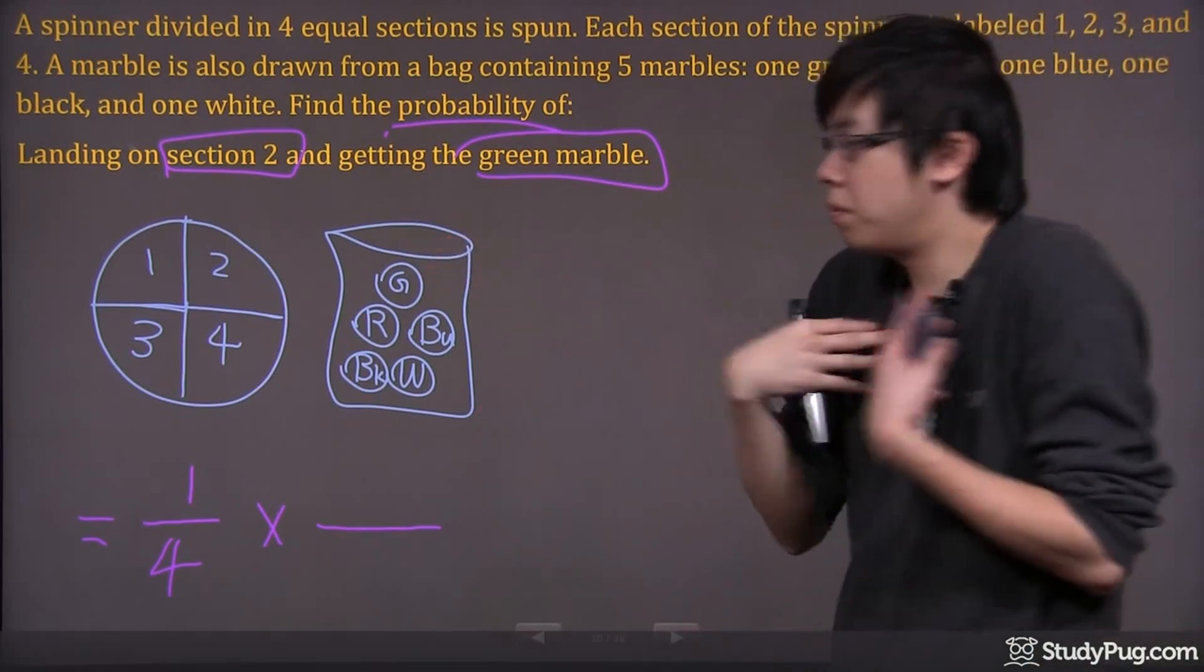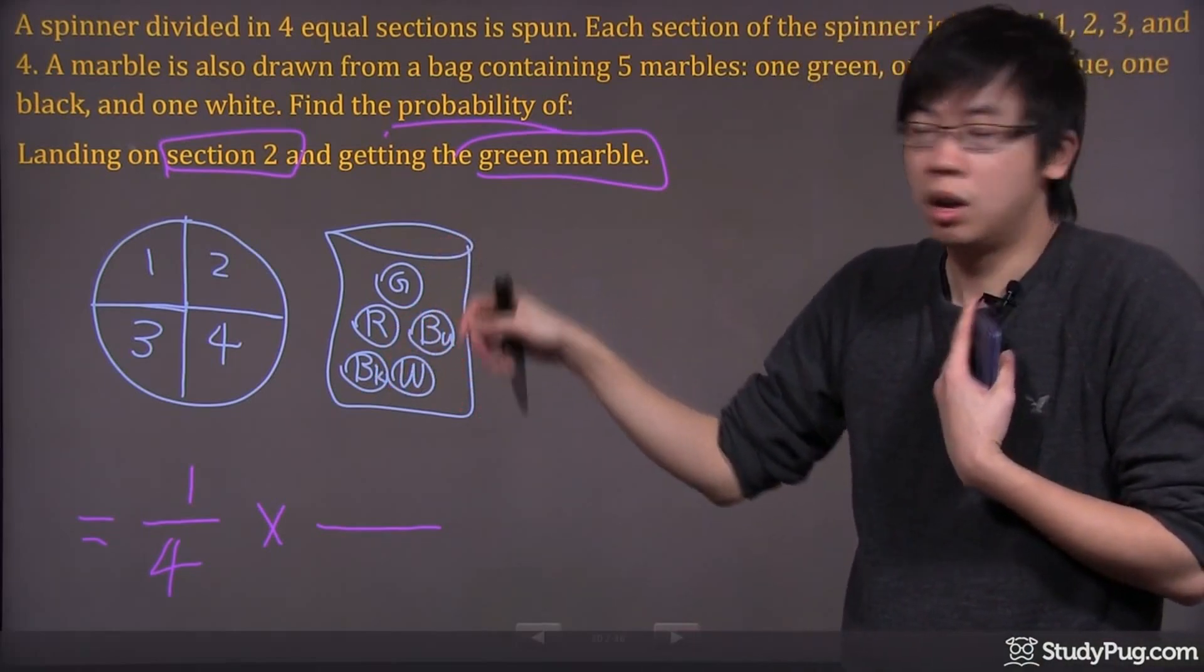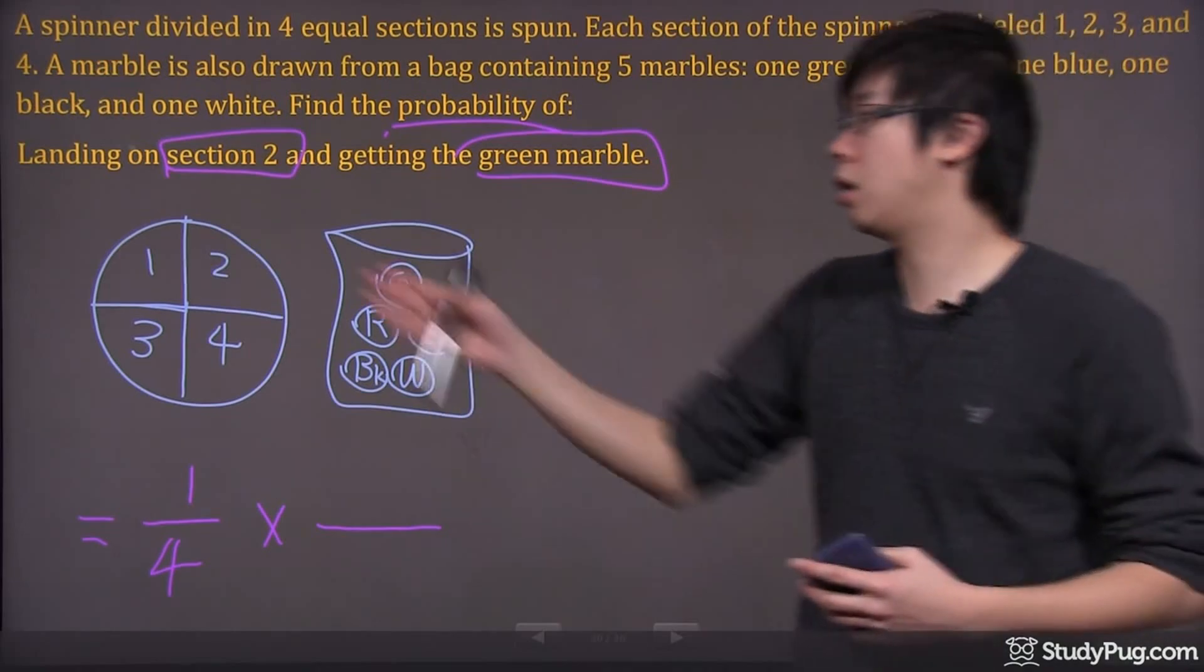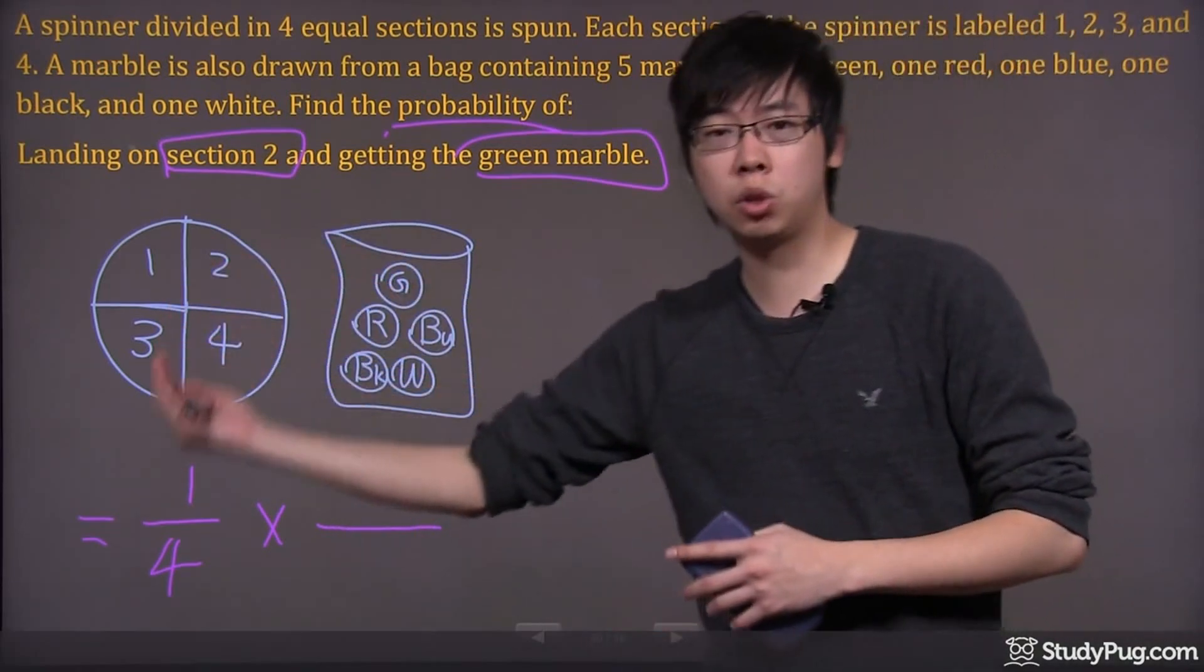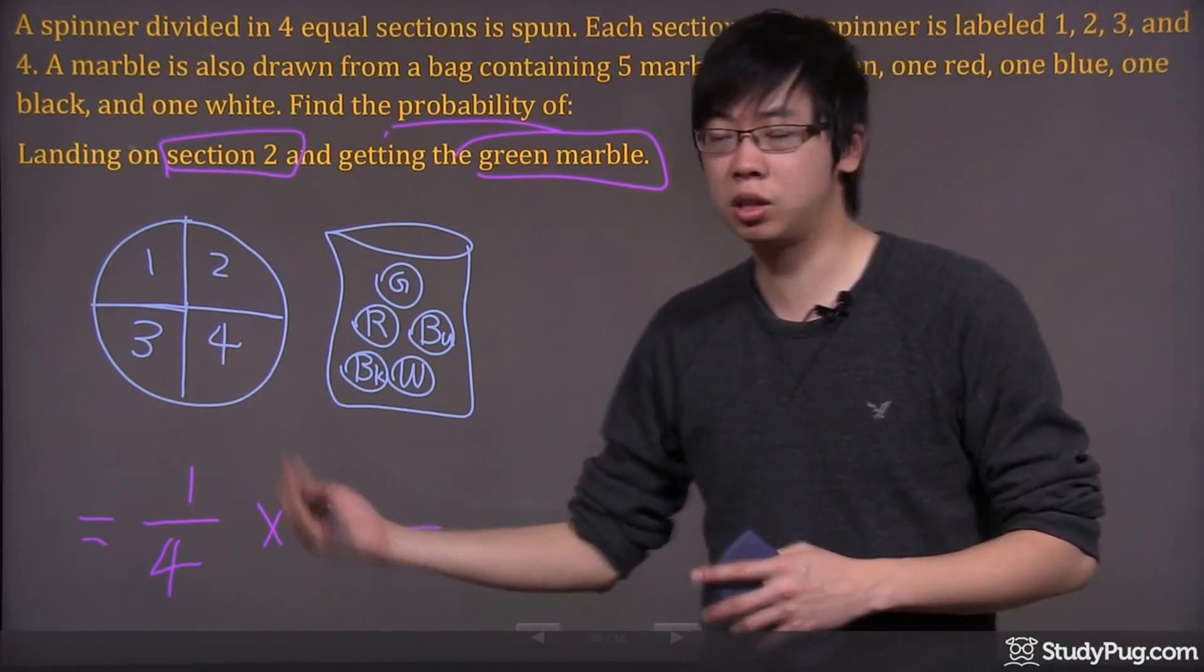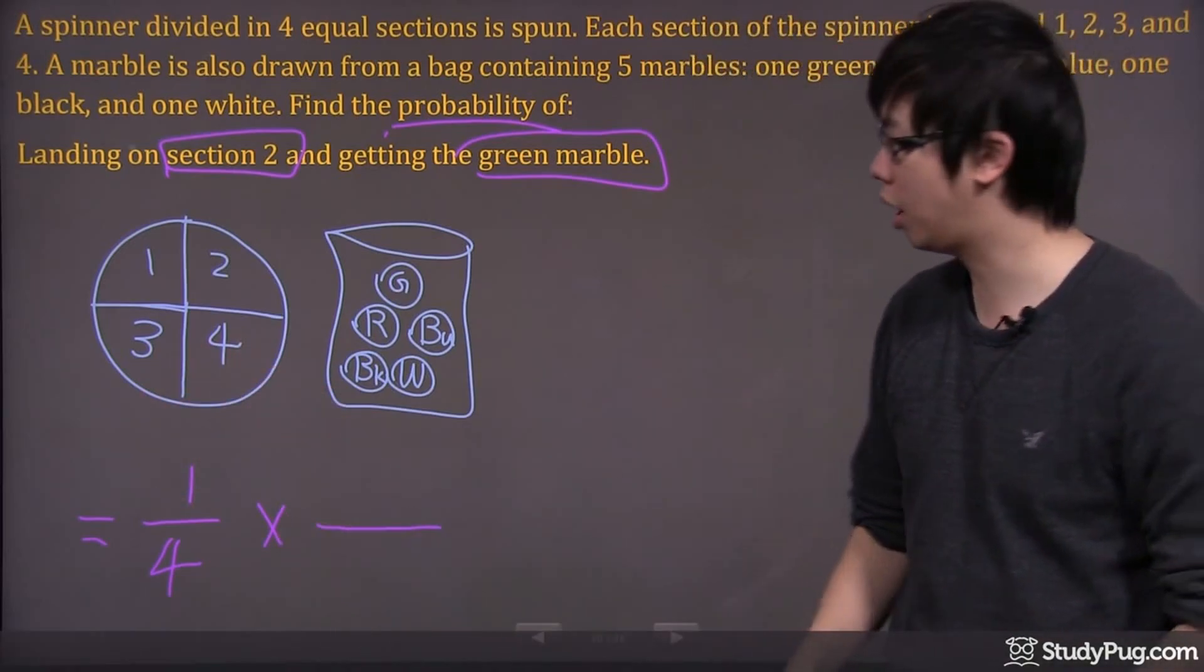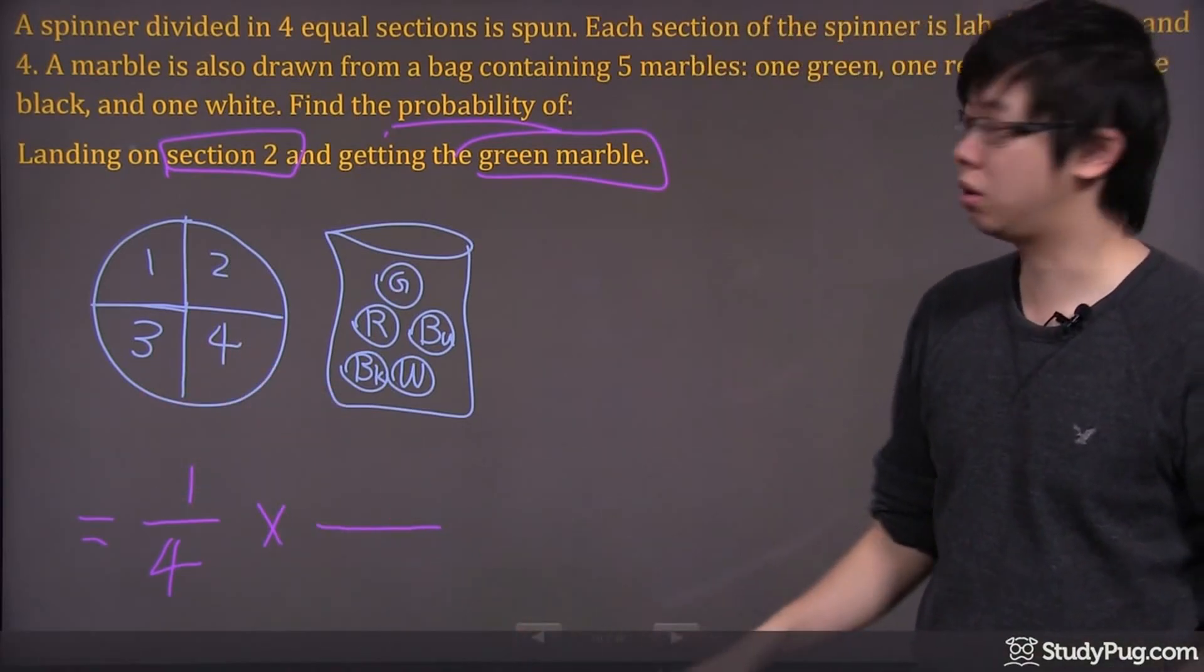Basically, me drawing the green from here is not affected by the spinning. It doesn't affect me at all. So when you have two different independent events, you're going to multiply the probabilities together.